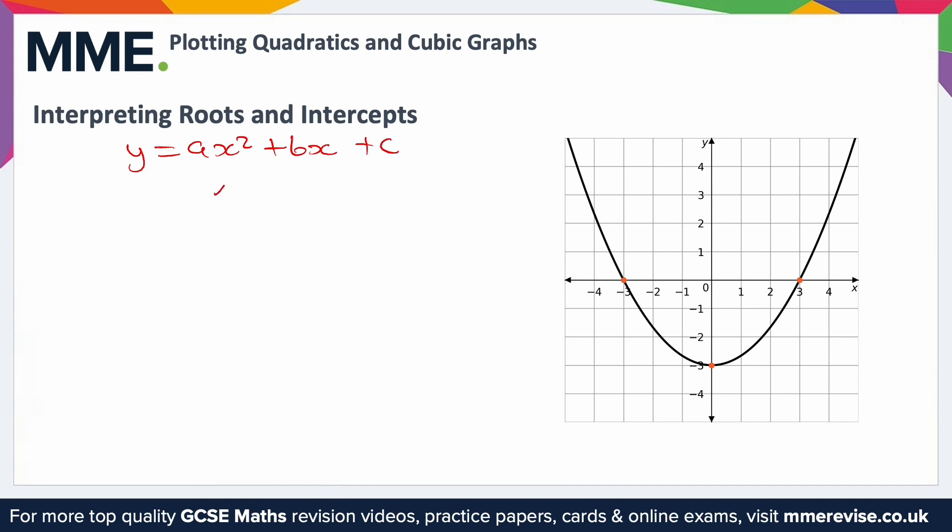These are the values of x where y equals zero. So looking at the graph on the right-hand side, where does y equal zero? Well, that's where the x-axis is, which is the line going across there. So we're looking for the points that cross that line.